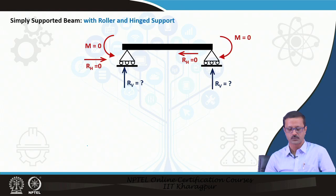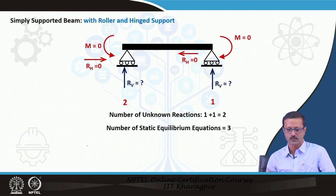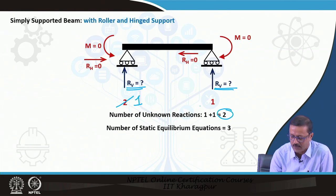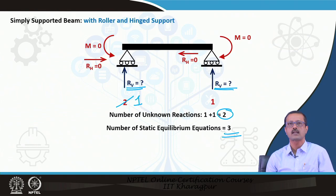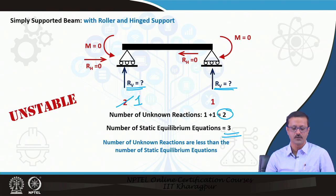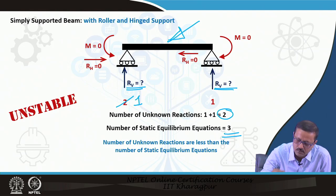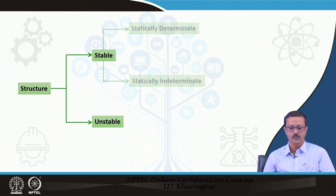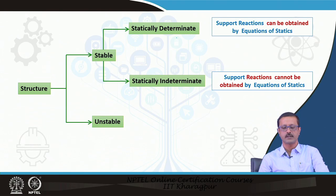For a simply supported beam with roller and hinge: 1 + 2 = 3 unknowns match 3 equations. If both supports are rollers, there are only 1 + 1 = 2 unknowns but 3 equations — more equations than unknowns. In that case, if a load is applied, the roller will move, giving an unstable structure. A structure can be stable or unstable, determinate or indeterminate.